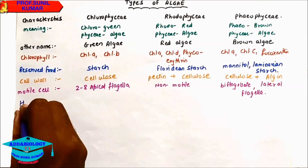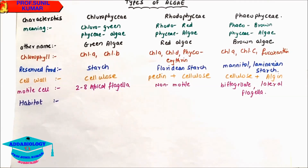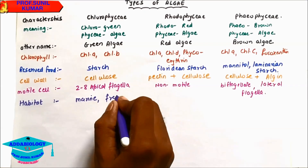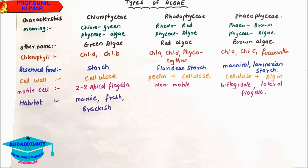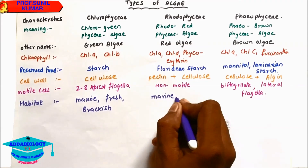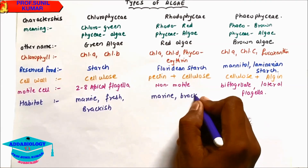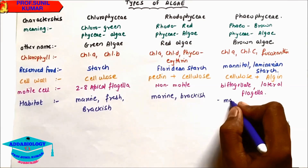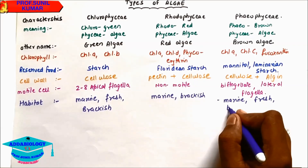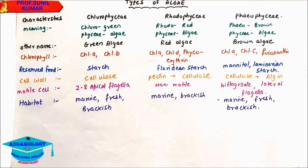Regarding habitat: green algae are marine, freshwater, or brackish water. Brackish water is the area where river and ocean water meet. Rhodophyceae is marine and brackish water. For Phaeophyceae, habitat is marine, fresh, and brackish water.